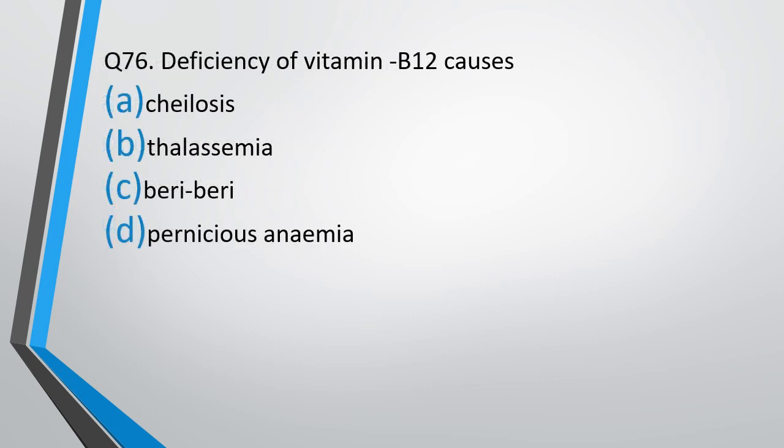Question number 76. Deficiency of vitamin B12 causes chlorosis, thalassemia, beriberi, or pernicious anemia. The correct answer is option D. Pernicious anemia.